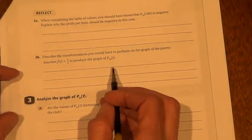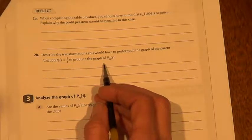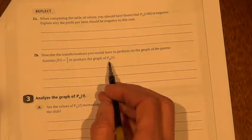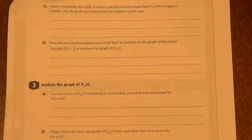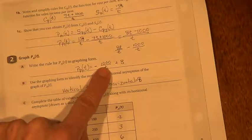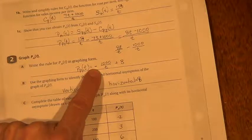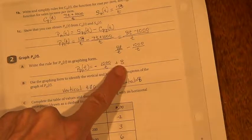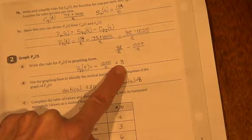That kind of gives you a hint of what's going on there. If you don't get it, come see me. Describe the transformations you would have to perform on the graph of the parent function, 1 over t, to produce the graph of profit per item t. So if we look back at our transformations, what would this be? That's in your A value. If you said stretch, you're right on. This would be a reflection, and that is your vertical stretch.